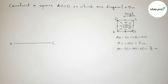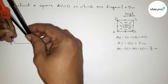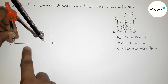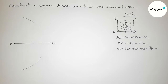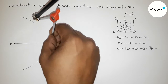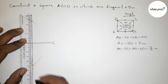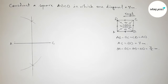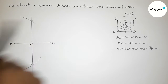Now bisecting line AC with the help of a compass. Putting the compass on point A, taking greater than half of AC, and drawing arcs above and below. Then putting the compass on point C with the same length and cutting arcs above and below. Joining this perpendicular bisector line — both lines bisect perpendicularly at point O.